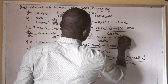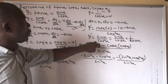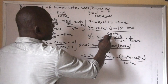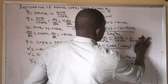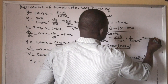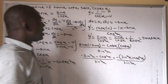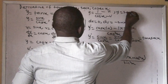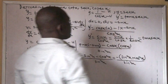Simplifying: sin over cos gives us tan, and 1 over cos gives us sec. So our answer is tan x times sec x. Therefore, if y equals sec x, the derivative is tan x · sec x.